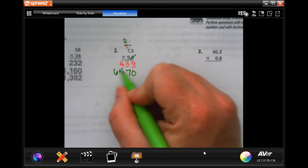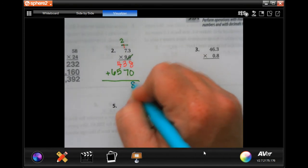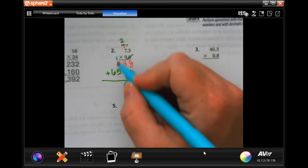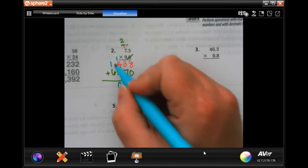Nine times three is twenty-seven, seven down, carry our two. Nine times seven is sixty-three, plus two more is sixty-five. Now we're going to add those up. Eight plus zero is eight, three plus seven is ten, carry our one.